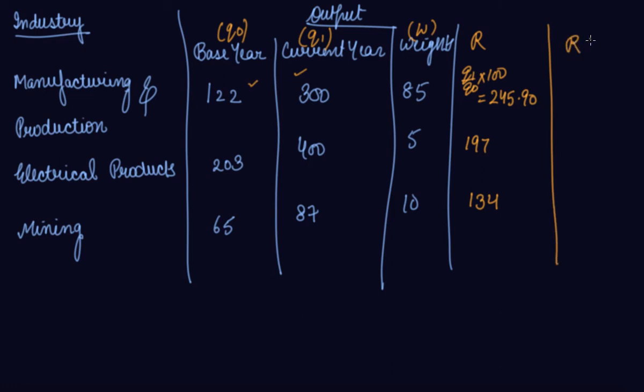You multiply R with W, that is weight. You multiply the R, you will get the answer as 20901.50, then 985, and then 1340.